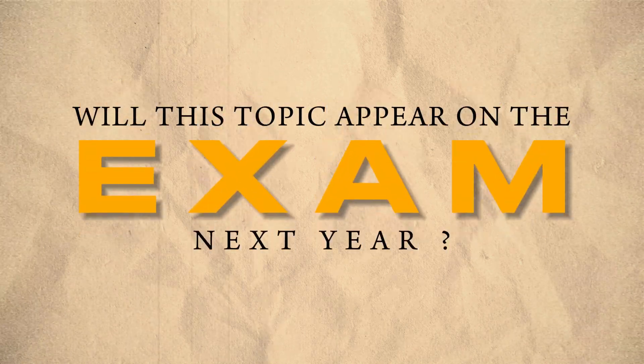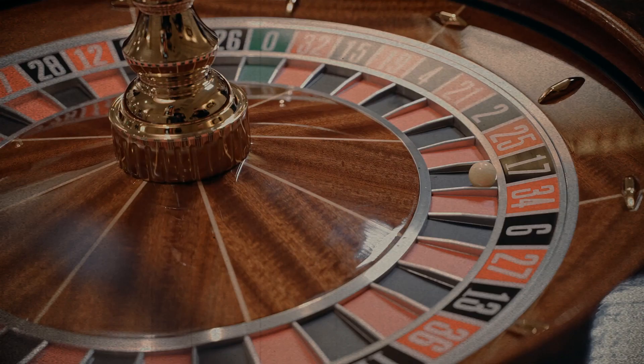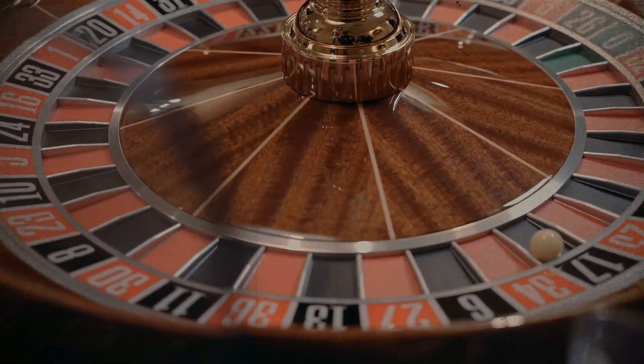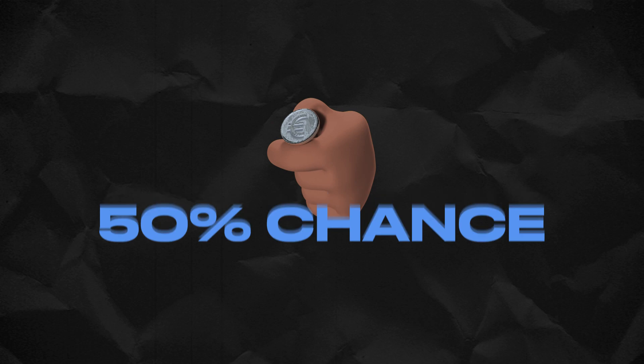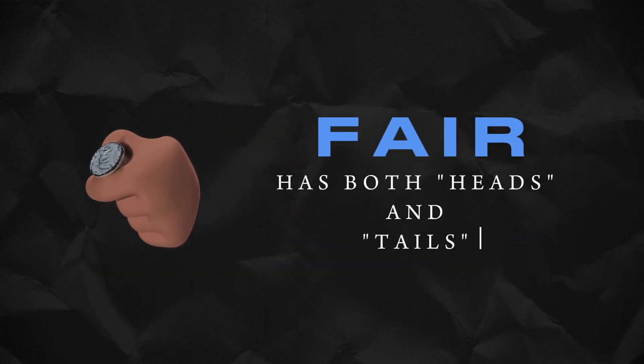Will this topic appear on the exam next year? This game of chance is like predicting the appearance of heads or tails, each with a 50% probability. That is, assuming that the coin is fair and each flip stands independently, of course.